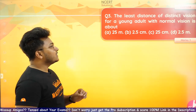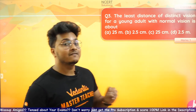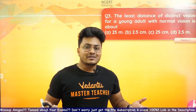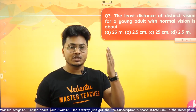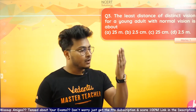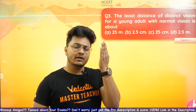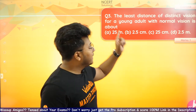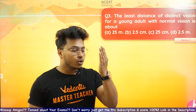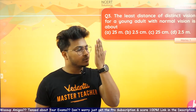Question number three: 'The least distance of distinct vision for a young adult with normal vision is about — 25 meters, 2.5 centimeters, 25 centimeters, or 2.5 meters?' The correct answer is 25 centimeters, option C. For a normal human being, the closest distance from which you can see things clearly is 25 centimeters. You can see objects without any strain on your eyes at this distance.